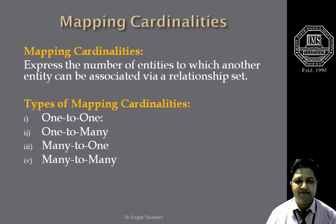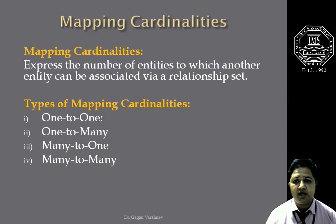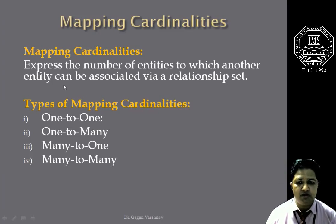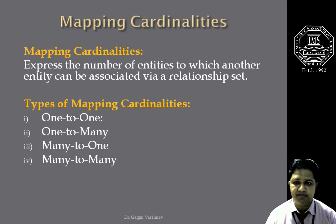In this flipped class, we will discuss about mapping cardinalities. Mapping cardinalities are also known as mapping constraints. These mapping constraints play an important role in the entity relationship model, which we can represent with the help of an entity relationship diagram.